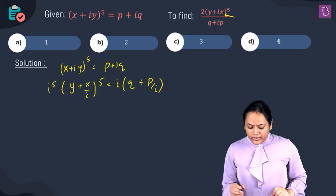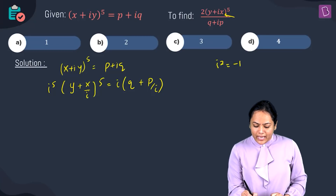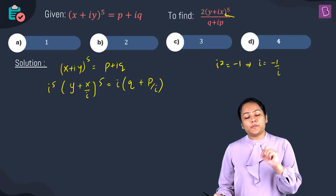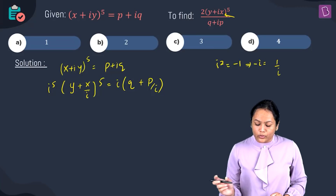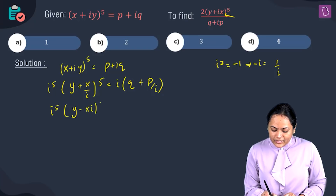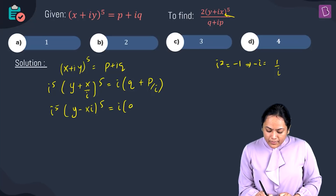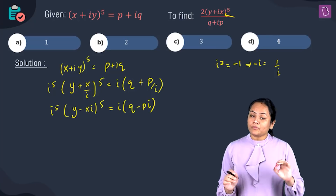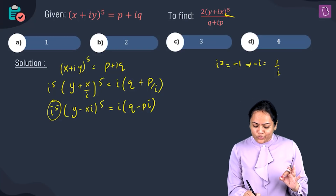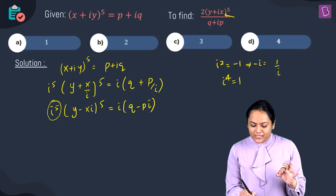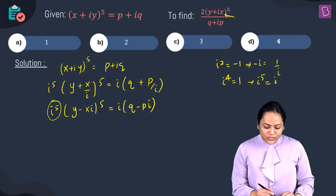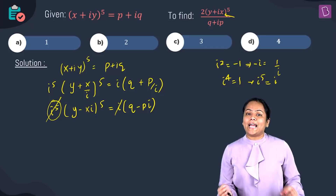Since i² = -1, we know that 1/i equals -i, so x/i becomes -ix. Therefore we get i^5 times (y - xi)^5 equals i times (q - pi). Since i^4 = 1, i^5 = i, and the i terms cancel from both sides, leaving (y - xi)^5 = q - pi.